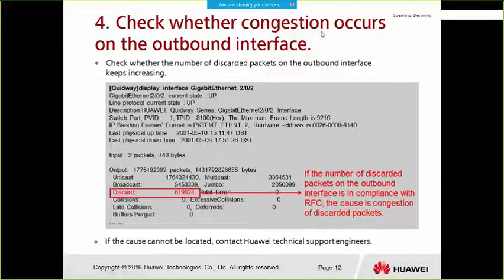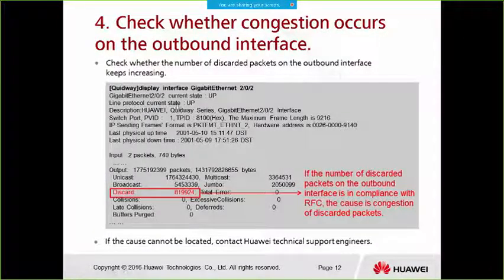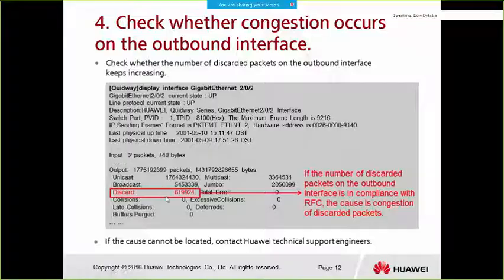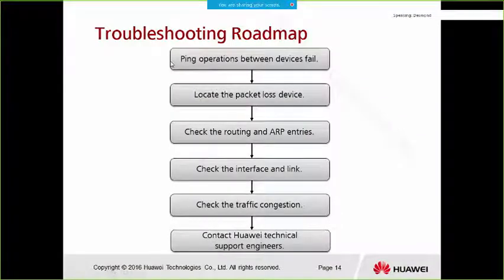Check whether congestion occurs on the outbound interface. Display the interface and look at the discard count for packets. If the number of discarded packets on the outbound interface is significant, this indicates congestion as the cause of packet loss.